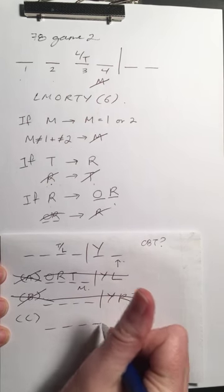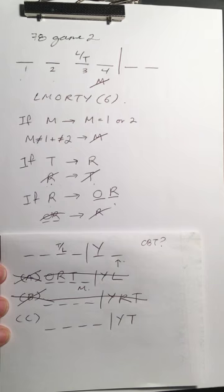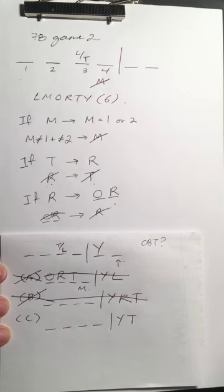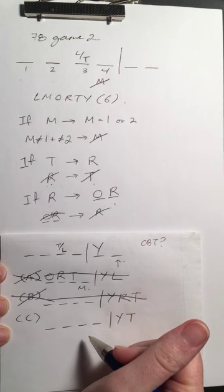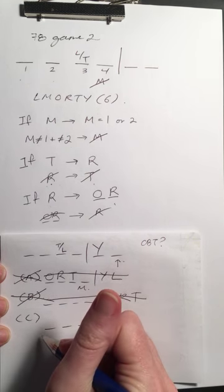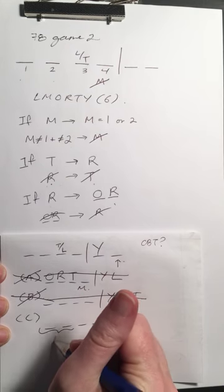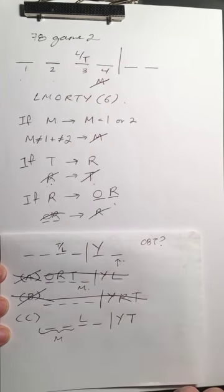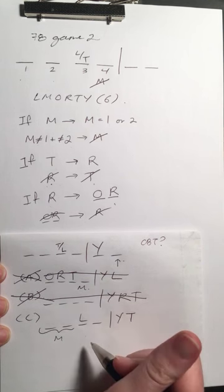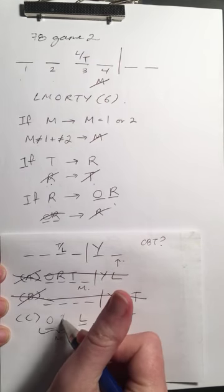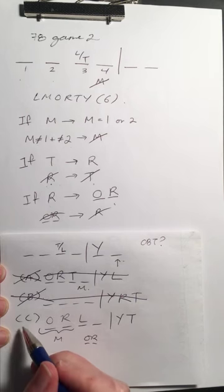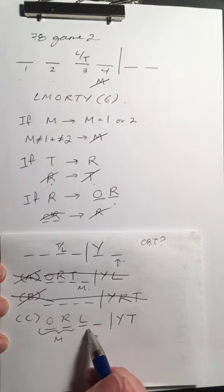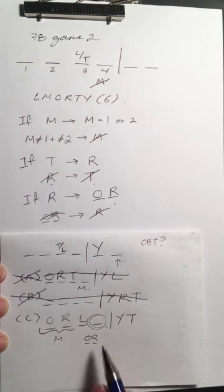Answer choice C: T is not assigned to the project. Y is out and T is out. T being out is not a trigger — it's a consequence of R being out, but doesn't trigger anything itself. So everyone else has to be in: M is in spots one or two, L is in slot three, and R is also in. If R is in then O has to be right before R — they'd have to take those spots, and we can't fill the fourth spot because M can't go there. So C doesn't work.